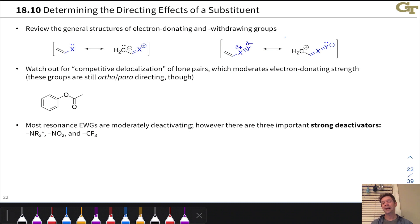And so to determine the directing effects of a substituent, the first thing we need to know is, is it an electron-donating or withdrawing group? I would encourage you to review the general structures of resonance electron-donating groups on the left here and electron-withdrawing groups here on the right.